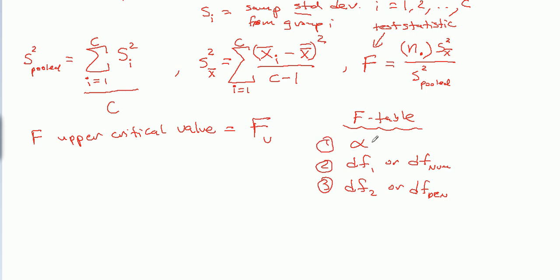Alpha is given to you in the example you're working on. That's the level of significance, typically 0.05 or 0.01. Degrees of freedom 1 or degrees of freedom numerator, same thing, is calculated by taking C, which we just saw before, subtracting 1. Always just take C minus 1. Degrees of freedom 2, or degrees of freedom denominator, is calculated by taking n, which was the total number of observations across all groups, minus C.